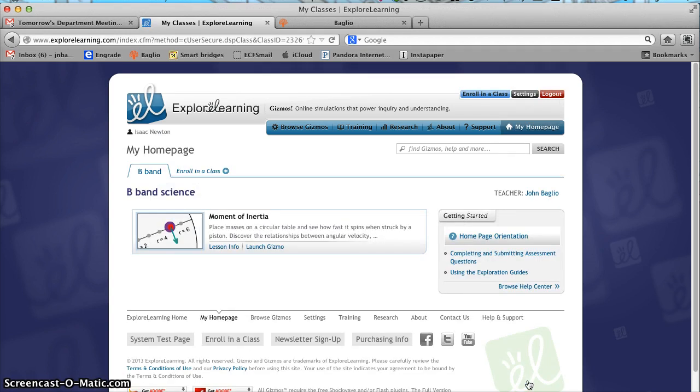Then, if you see this screen it means you successfully enrolled in the class. And you'll see a tab that says B-Band as well as B-Band Science and the activity. Any activities that I will have set out for you will be here. In this case it is moment of inertia. Let's click on it.